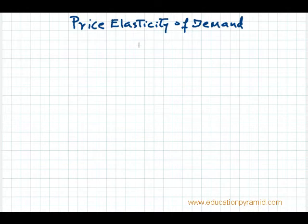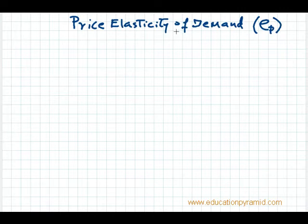In this lesson, we will discuss price elasticity of demand. The symbol we use for price elasticity of demand is Ep. It is the degree of responsiveness in quantity demanded due to a change in price of the commodity. This shows how sensitive quantity demanded is to the price of a commodity.